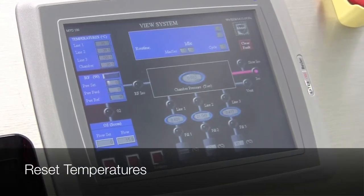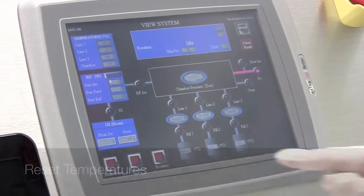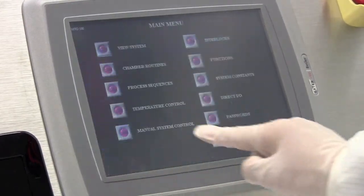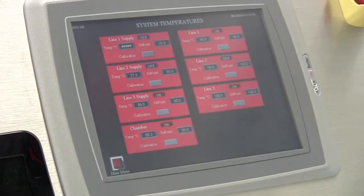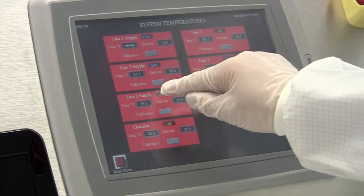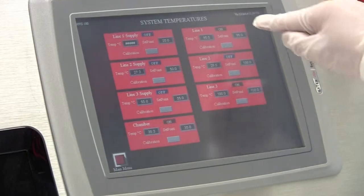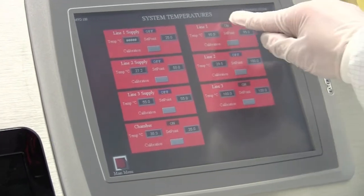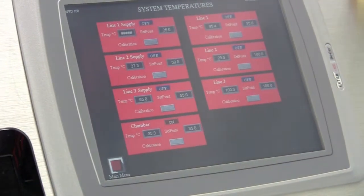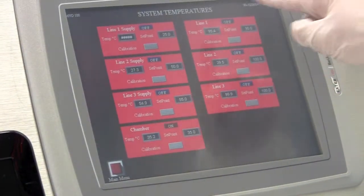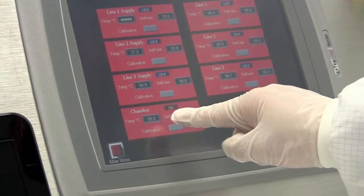The next step is to turn off the temperatures. So here we go back to the main menu and touch the temperature control. Turn off line three supply, line one, and line three. Now the temperatures are turned off except the chamber temperature.